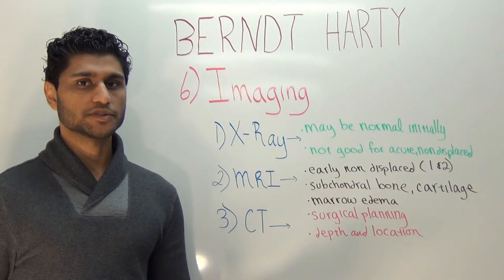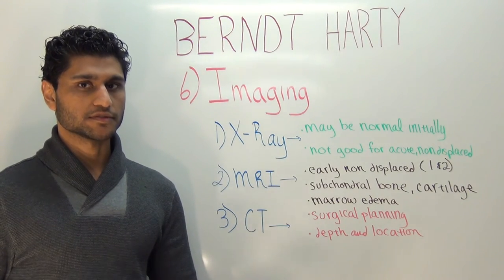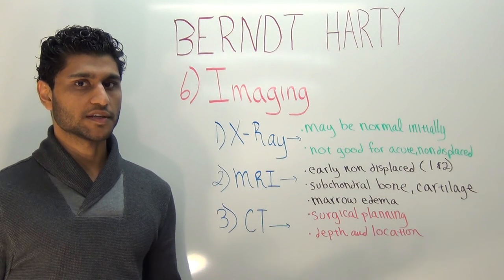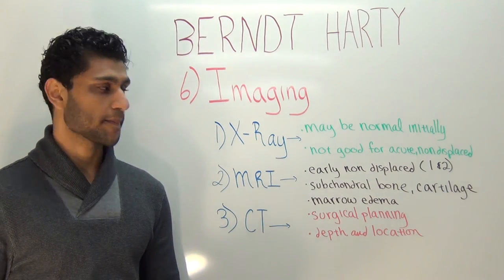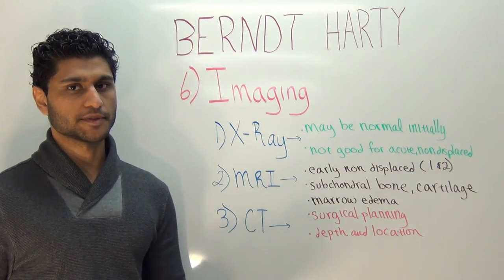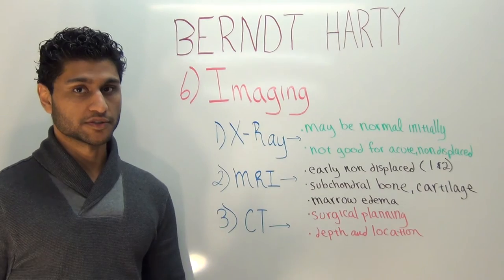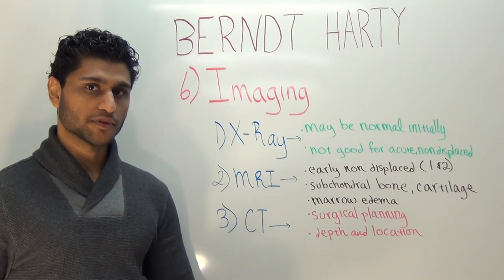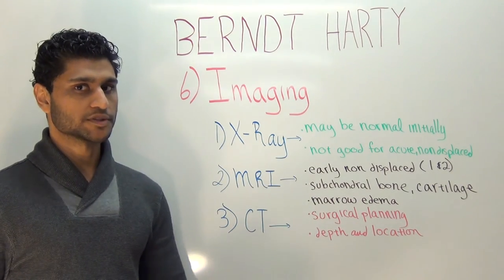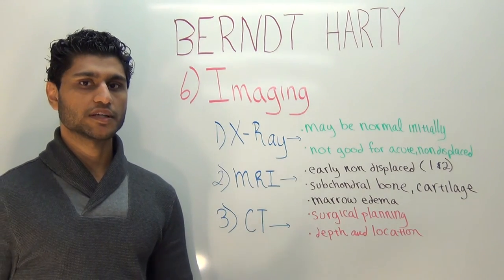Regarding imaging: acute non-displaced lesions do not always show up on initial x-rays, so normal films in the acute setting do not necessarily rule out an OCD. MRI, however, is really good for picking up those early non-displaced lesions, evaluating the subchondral bone and articular surface, and assessing for bone marrow edema. CT is great for surgical planning because it can evaluate the exact depth and location of a lesion.